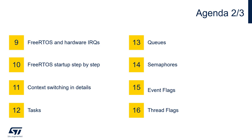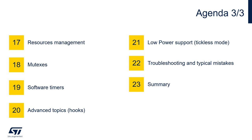After this we'll start explaining FreeRTOS components one by one, starting from tasks. After tasks, there will be inter-task communication: queues, semaphores, event flags, and thread flags. After inter-task communication we will switch to resource management, then discuss mutexes and software timers. After this there will be a part called advanced topics covering mechanisms within FreeRTOS that can help during the development process. Then we'll discuss low power support available within FreeRTOS — the so-called tickless mode. Finally, I'll discuss typical mistakes and possible problems that may be faced during operating system-based application development.